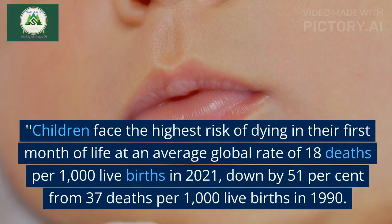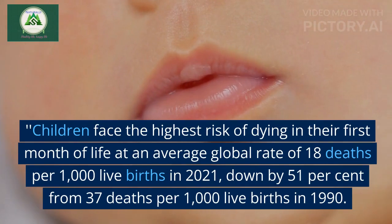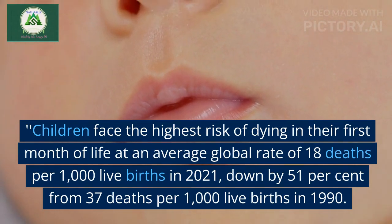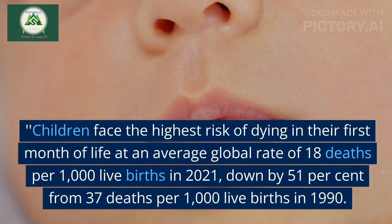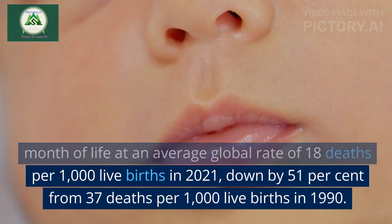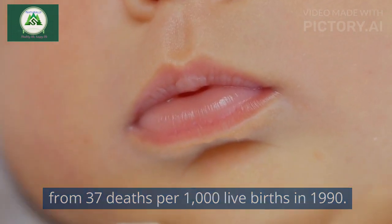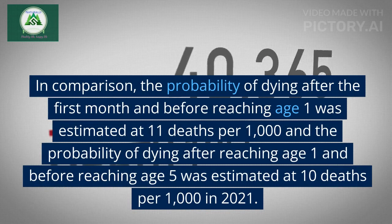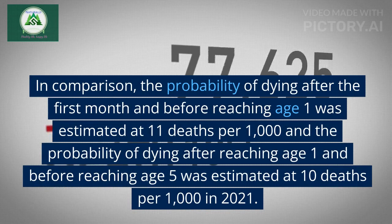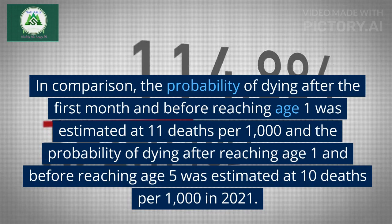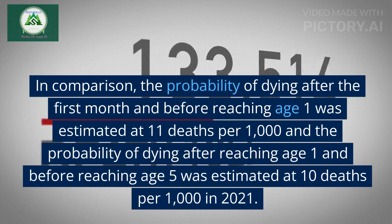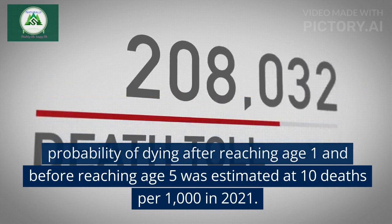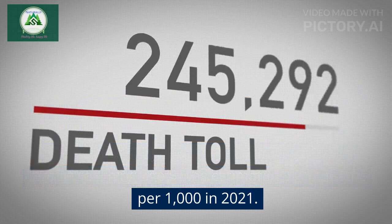Children face the highest risk of dying in their first month of life, at an average global rate of 18 deaths per 1,000 live births in 2021, down by 51% from 37 deaths per 1,000 live births in 1990. In comparison, the probability of dying after the first month and before reaching age 1 was estimated at 11 deaths per 1,000, and the probability of dying after reaching age 1 and before reaching age 5 was estimated at 10 deaths per 1,000 in 2021.